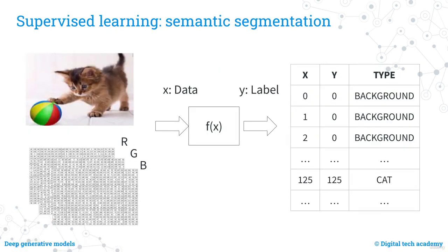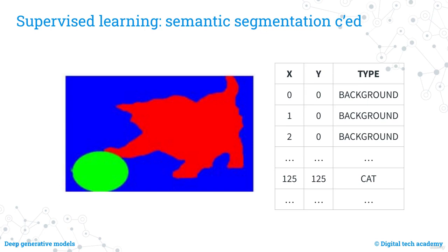Semantic segmentation is a type of machine learning that involves making detailed, pixel-level predictions about the categories of objects in an image. It is a natural progression from classification, which makes a prediction for an entire input, to detection, which provides categories and spatial locations, and then to semantic segmentation, which makes dense predictions for every pixel, labelling each pixel with the class of the object it belongs to. In the example, blue pixels represent the background, red pixels the cat, and green pixels the ball.